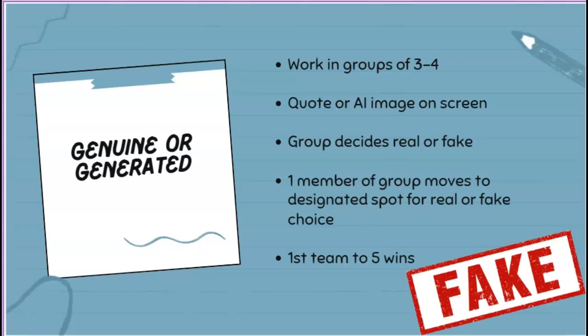The next one is called Genuine or Generated. Students work in groups of three or four. There's a quote or an AI image on the screen, and groups decide whether it is real or fake. One member of the group moves to a designated spot in the room for real or fake — you might have two different spots. If you think it's real, somebody from your group steps over here; if you think it's fake, step to this side and see who wins. First team to five wins. This could be a quote or an AI image on the screen.